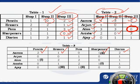For the same reason, we can say that Alish must have bought two pens from Shop 1. Also, we can see that Alish and Arjun did not buy any article from Shop 2.